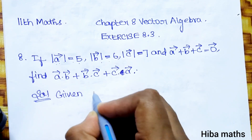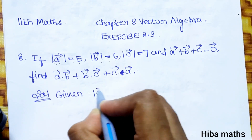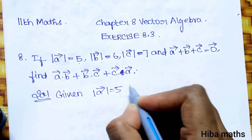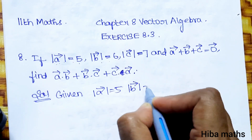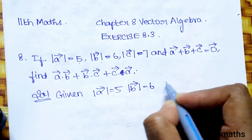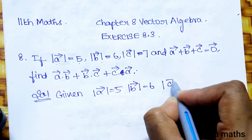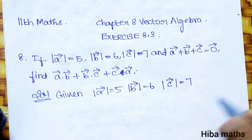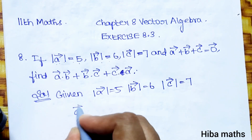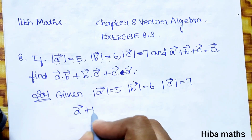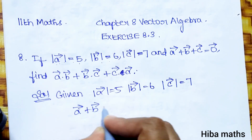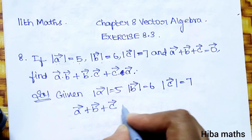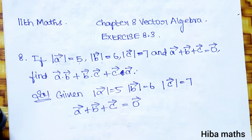The given values are: modulus of a vector is equal to 5, modulus of b vector is 6, modulus of c vector is 7, and a vector plus b vector plus c vector is equal to zero vector.